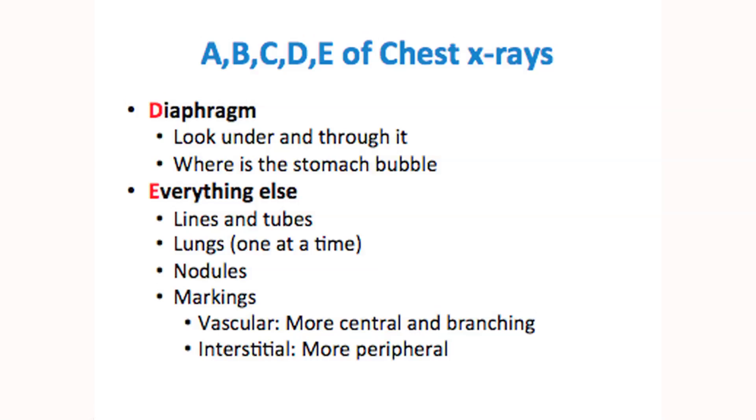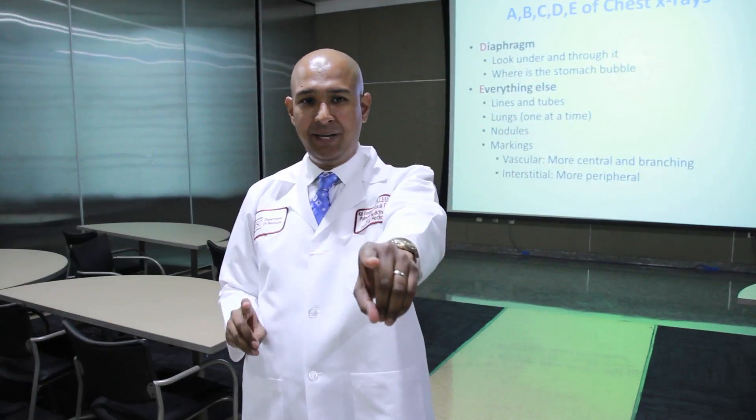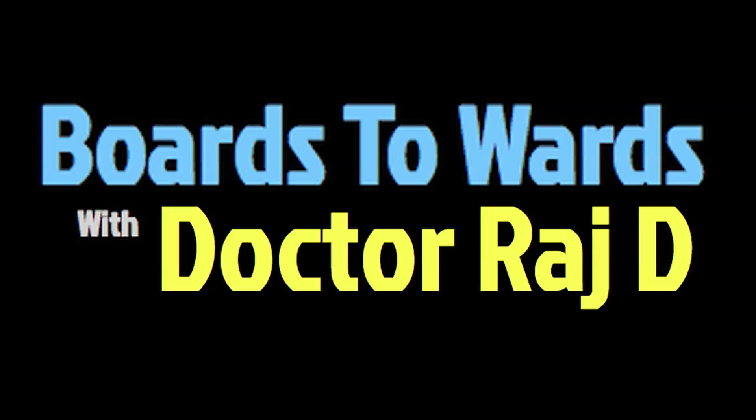When we talk about the word markings, purely based on the chest x-ray, it's really hard to say these are vascular versus interstitial. But as a rule of thumb, as you go more to the periphery, chances are these will be interstitial markings. As you're more central, chances are they're going to be vascular-type markings. Go through these steps and you'll be ready not only for the boards, but for the wards. If you have any further questions about chest x-rays, please go to my website or contact me here at USC.